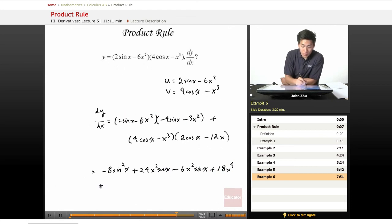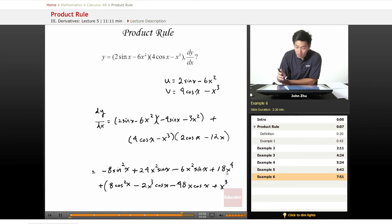And now plus, we'll just do the same thing to the bottom two factors. 8 cosine of x squared minus 2x cubed cosine of x minus 48x cosine of x plus 12x to the fourth.